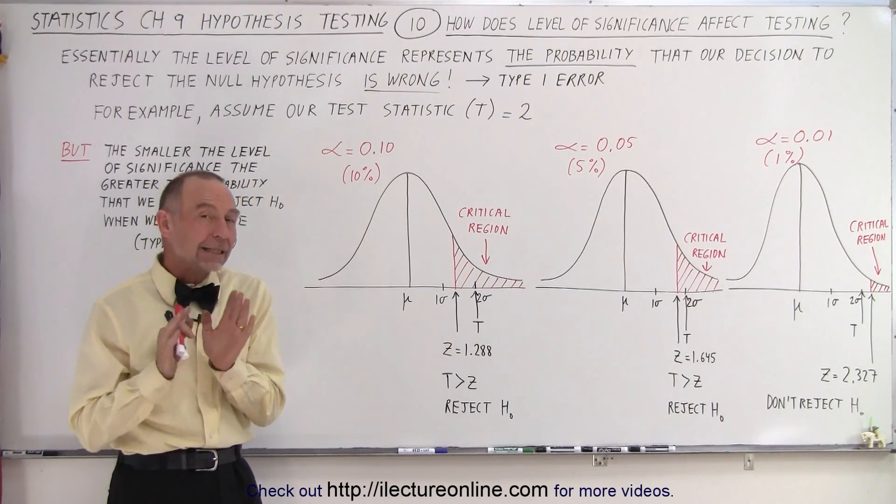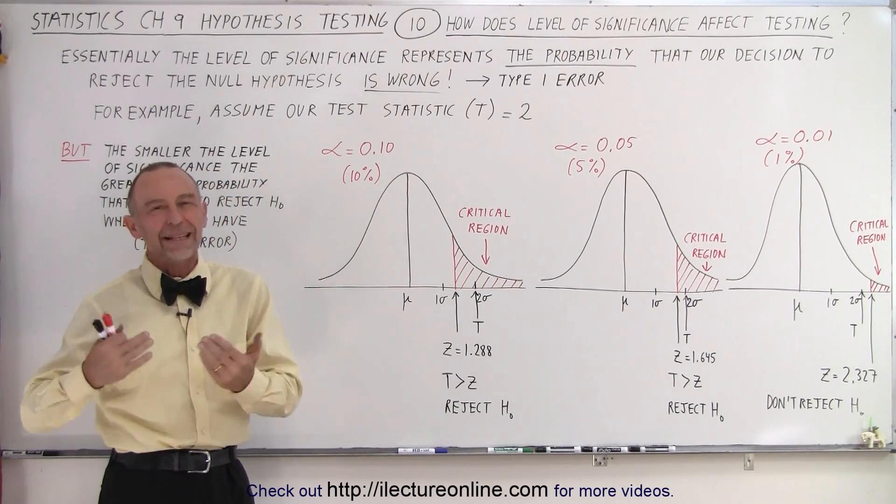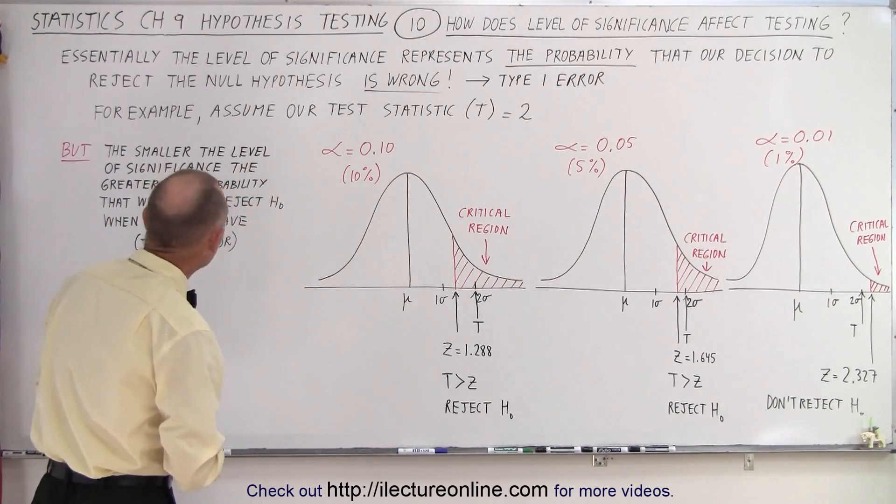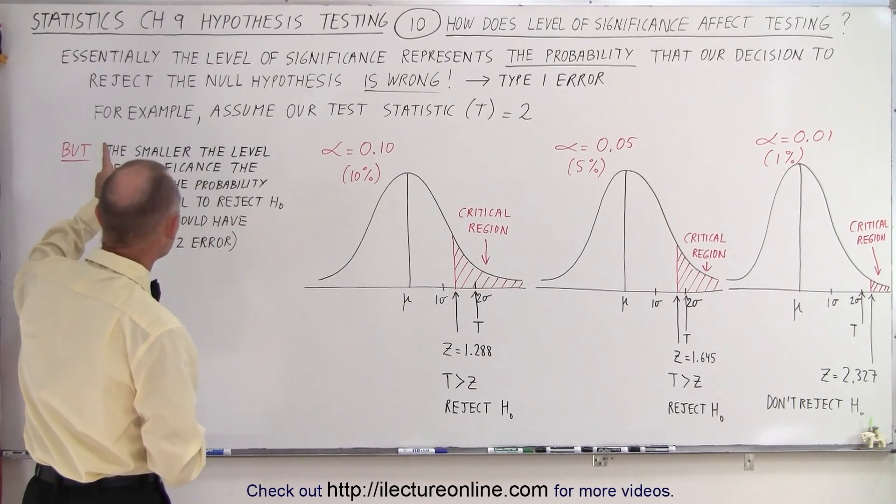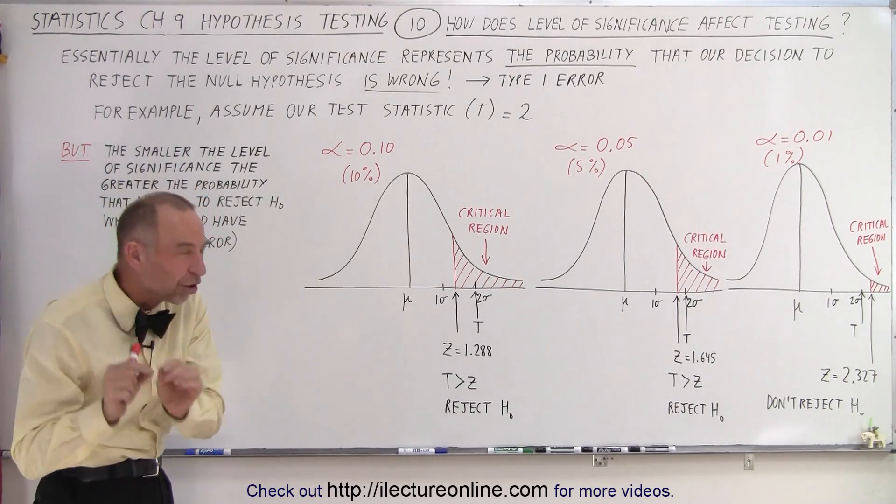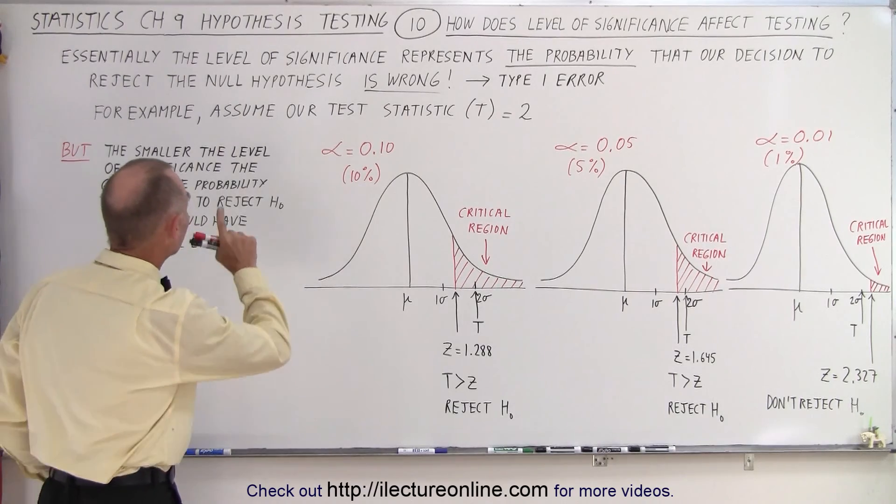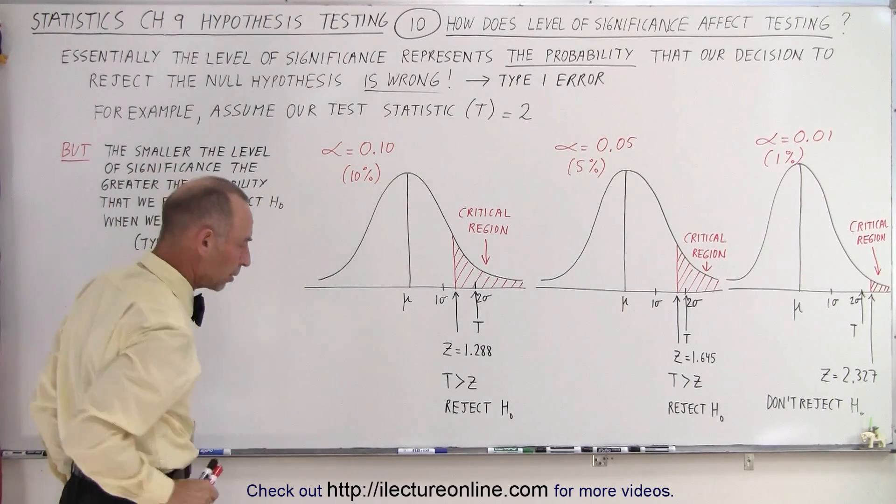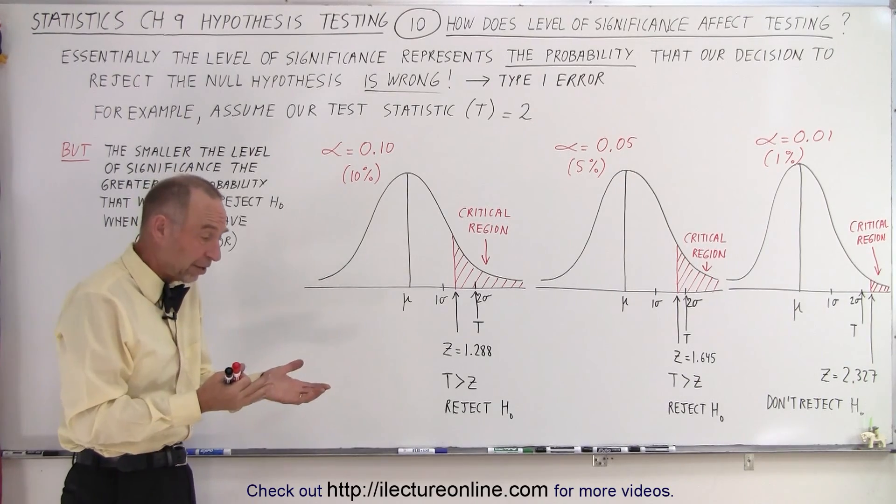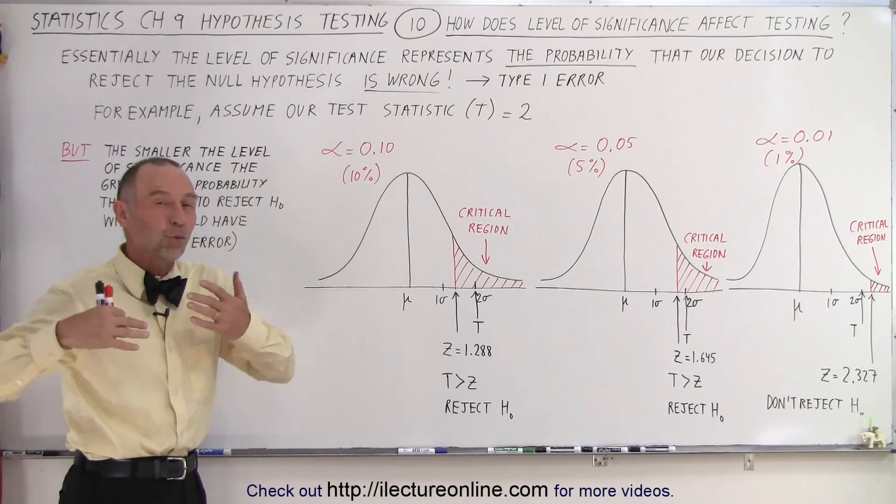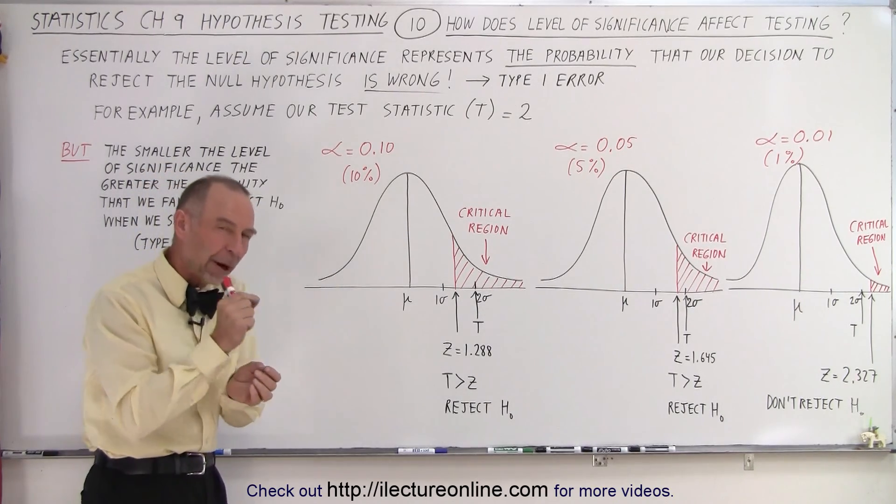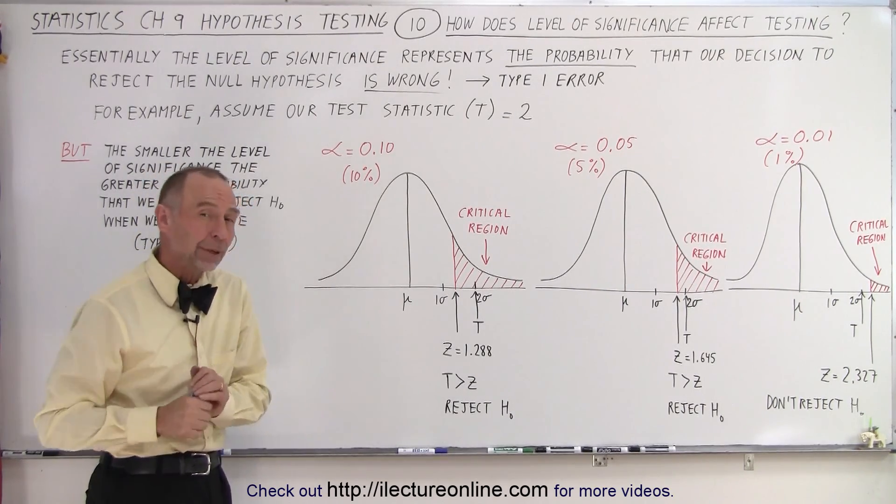Remember that the level of significance is something that we set ahead of time for a specific purpose. Essentially, the level of significance represents the probability that our decision to reject the null hypothesis is wrong. In other words, we make a decision to reject the null hypothesis, and that decision is a wrong decision. That's called a Type 1 error, and the level of significance is the probability that we'll make that Type 1 error.